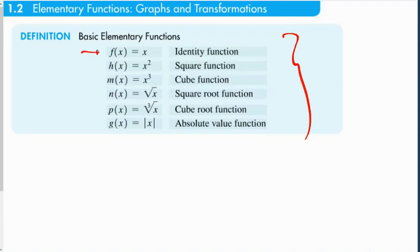f of x equals x is the identity function. Remember earlier we said that f of x, h of x, m of x, any of these function names can be replaced with the variable y. So it is called the identity function because it is the same as y equals x, which means that any value that x has, y will take on the same value.